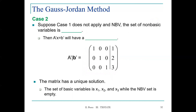Suppose case one does not apply and the set of non-basic variables is empty. Then the set of linear equations will have a unique solution. All variables x1, x2, and x3 are basic, and you have your identity matrix — that means you have a unique solution for your system. The set of basic variables is x1, x2, and x3, when the non-basic set is empty.